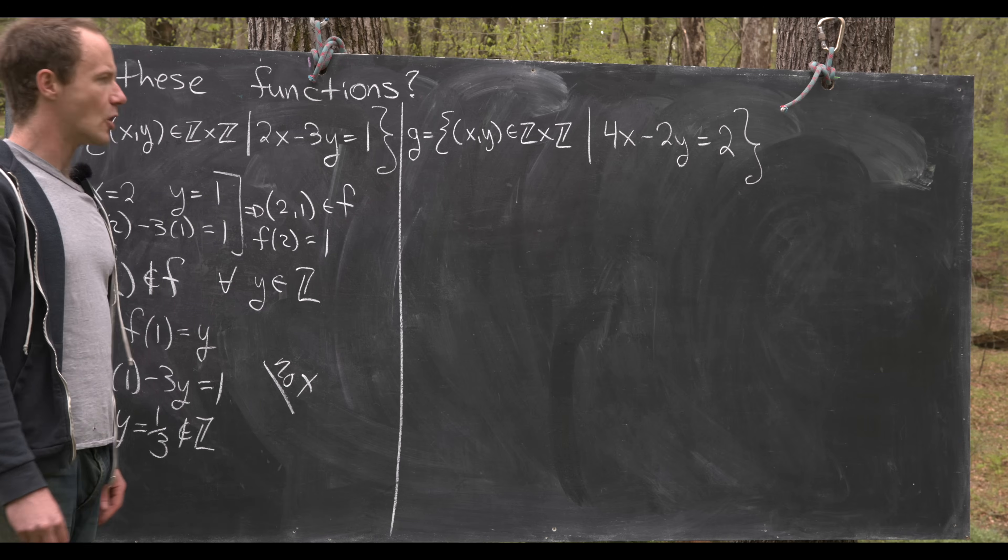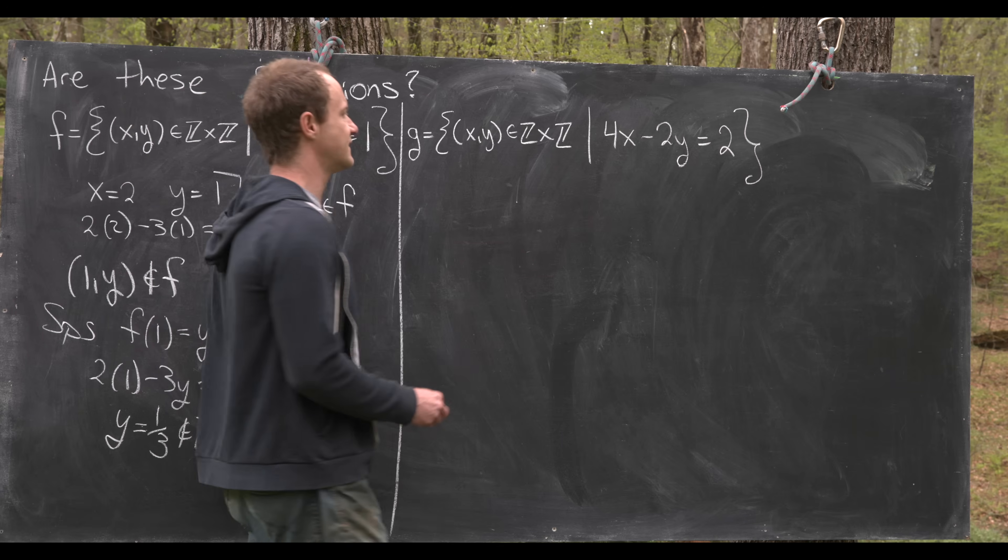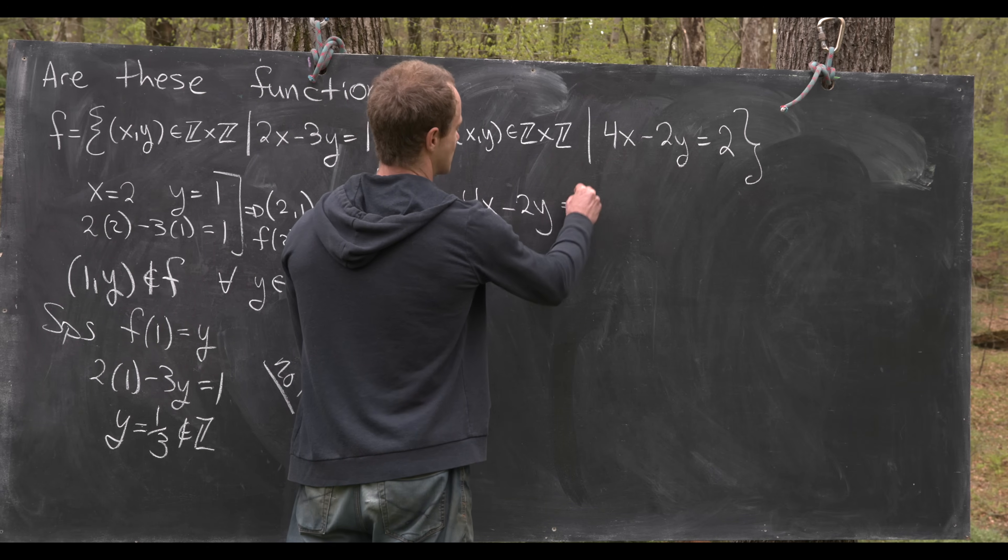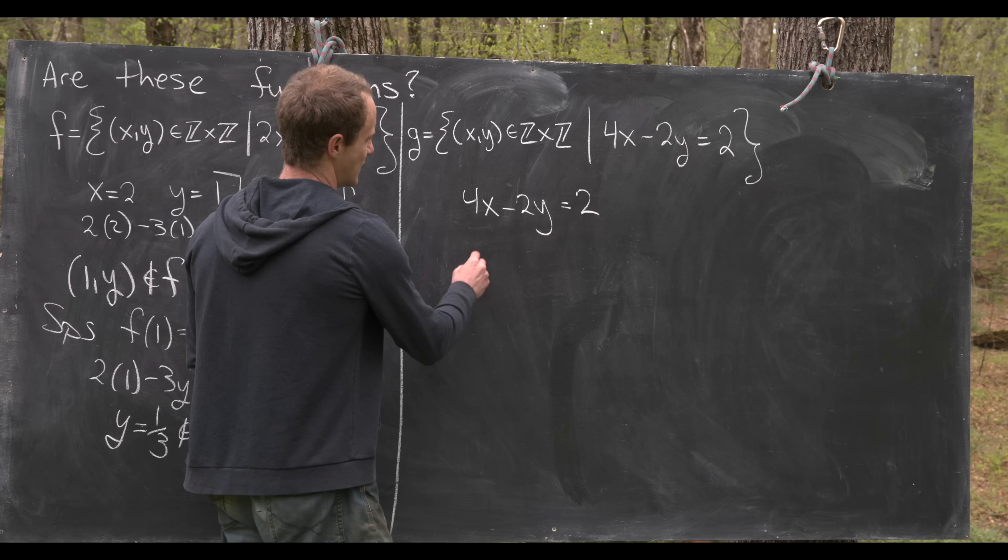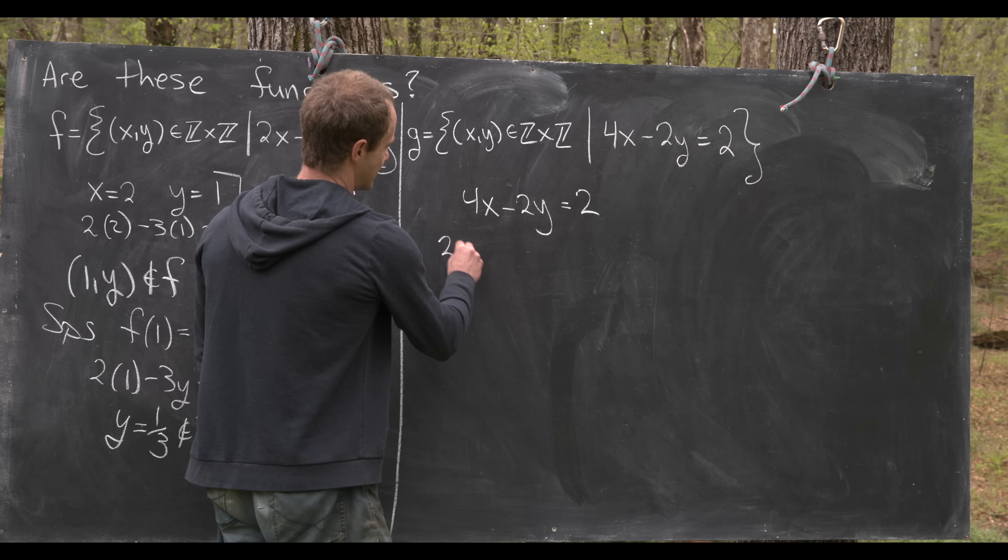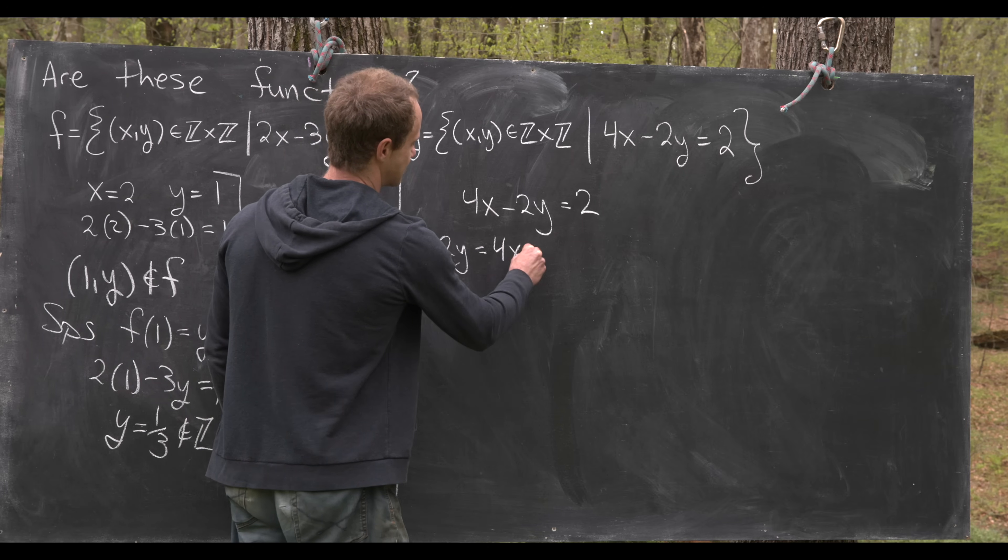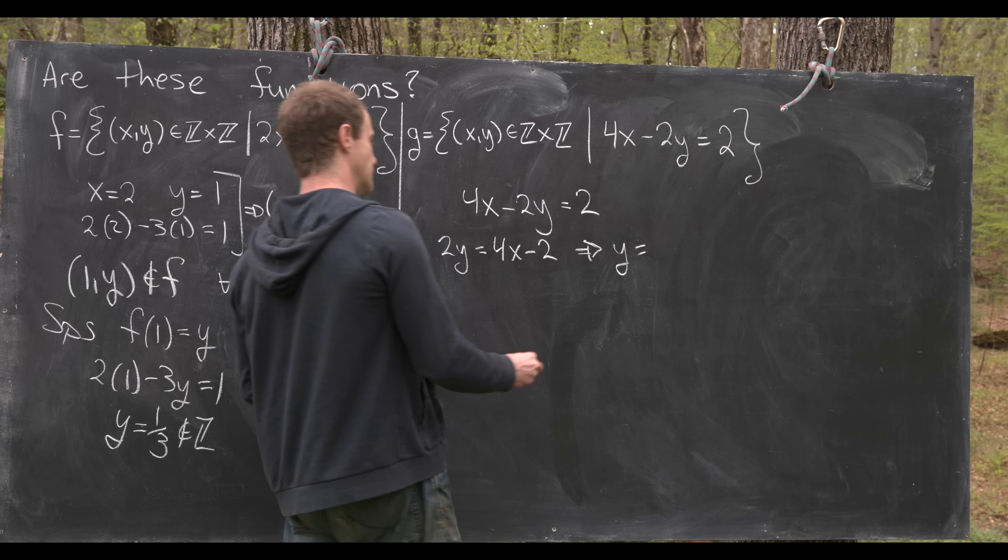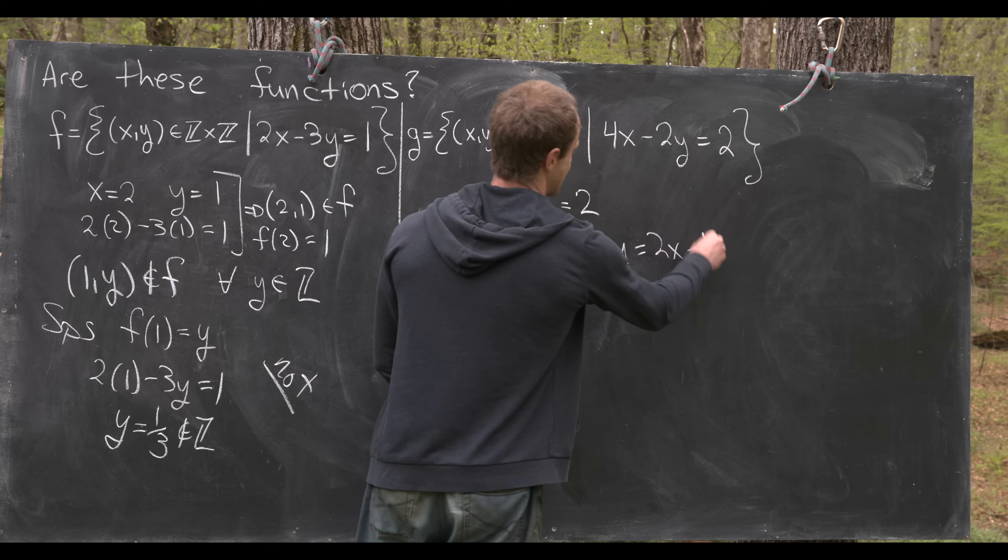But notice we're okay here and we can do a brief calculation. So if we set 4x-2y equal to 2 then we can move some things around. We'll have 2y is equal to 4x-2 which tells us that y is equal to 2x-1.